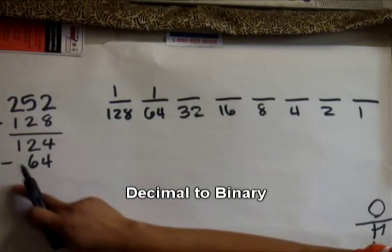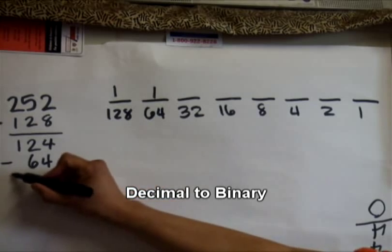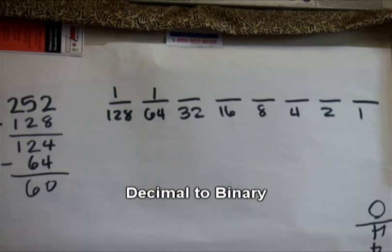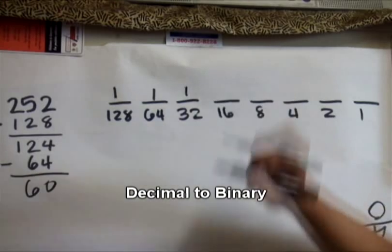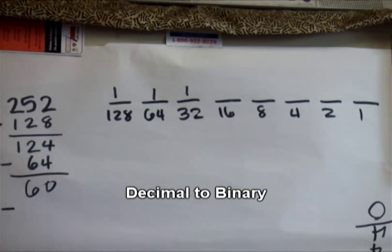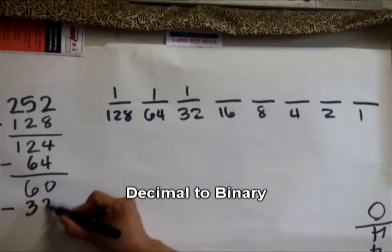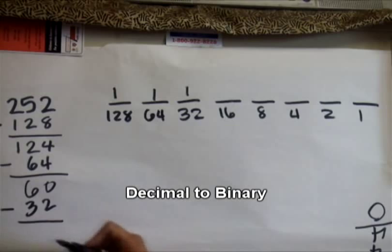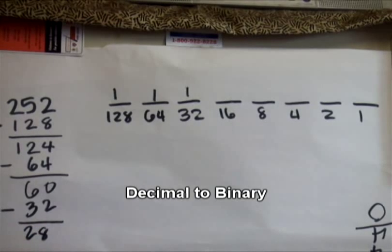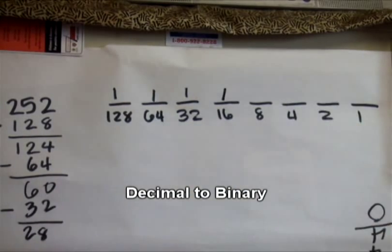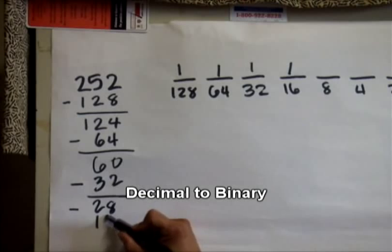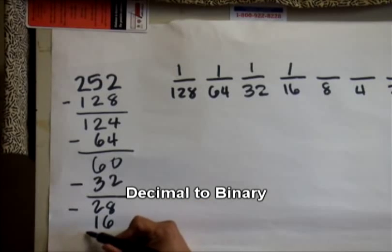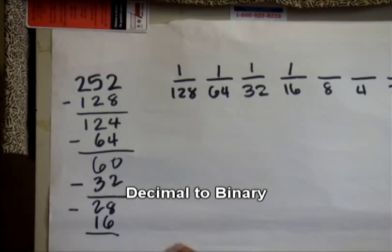124 subtract 64 equals 60. Does 32 fit in 60? Yes, so we put one. 60 subtract 32 equals 28. Does 16 fit in 28? Yes, we put one. 28 subtract 16 equals 12.